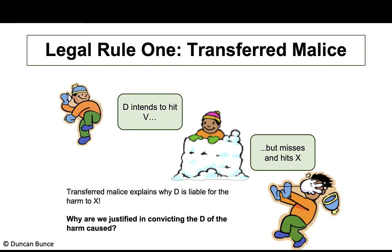Two further legal rules regarding mens rea to know. First is transferred malice. Imagine it has been snowing — the defendant throws a snowball intending to hit a victim but misses, and it hits another person instead. This rule ensures the defendant remains liable; just because the victim ends up being someone else should not be a means of avoiding liability.